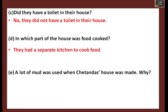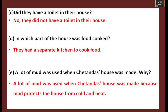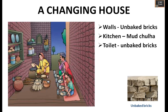Next question: A lot of mud was used when Chetan Das's house was made - why? Because mud protects the house from cold and heat. It was also the material they had available, so they built their house with a lot of mud.